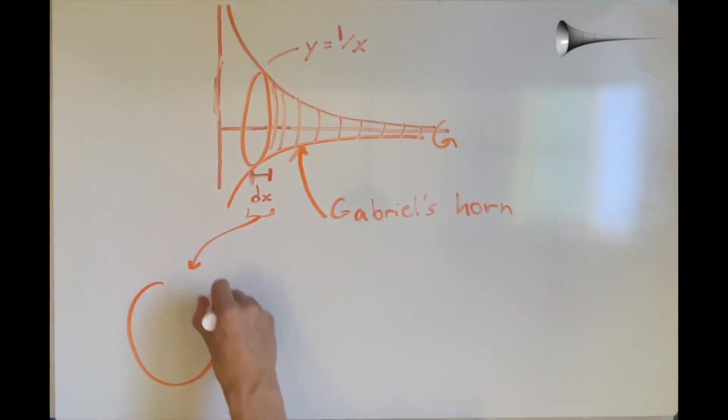The cross-section of Gabriel's horn is a circle with radius y which equals 1 over x. The area of a circle is pi r squared, so the area of any cross-section of the horn must be pi over x squared.